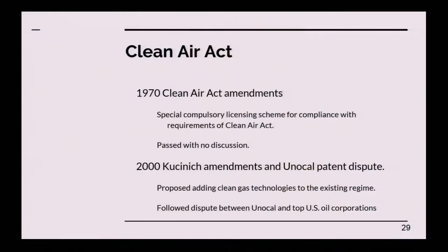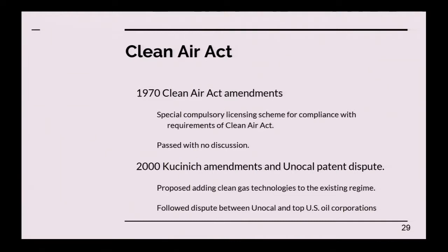In 1970, Congress passed amendments to the Clean Air Act that included a special compulsory licensing scheme for compliance with the requirements of the Clean Air Act — it was just inserted into the bill with no discussion during the hearings. After the bill passed, there were discussions about repealing it, but they decided it would be better to keep it in and see how it worked out rather than repeal it and take years of study, as they thought it would disrupt the act.